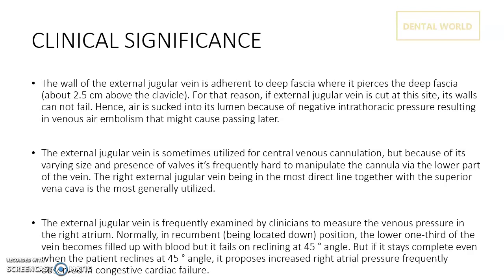The external jugular vein is frequently examined by clinicians to measure venous pressure in the right atrium. Normally in the recumbent position, the lower one third of the vein becomes filled with blood, but it empties on reclining at a 45-degree angle. However, if it remains distended even when the patient reclines at 45 degrees, this indicates increased right atrial pressure, which is frequently observed in congestive heart failure.